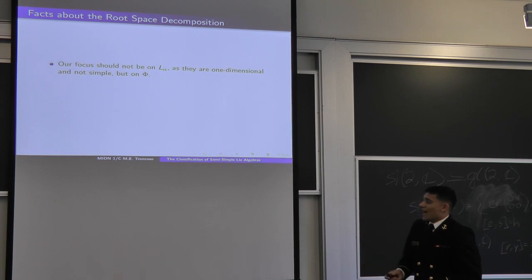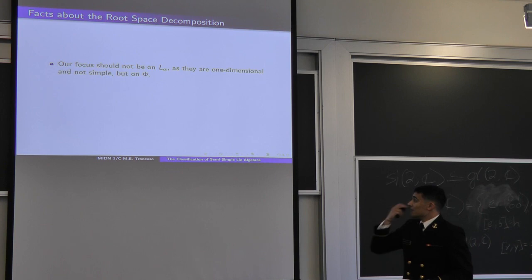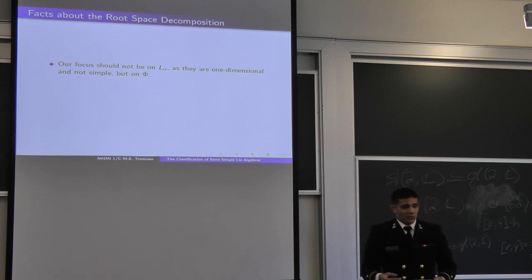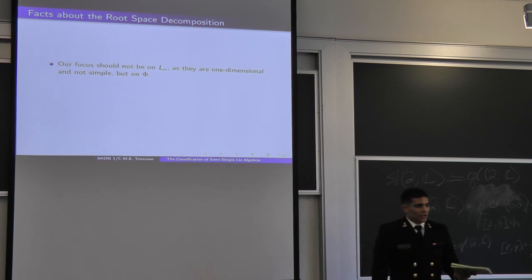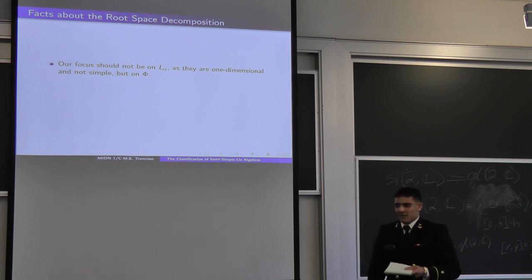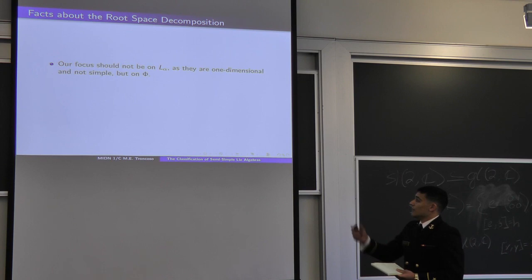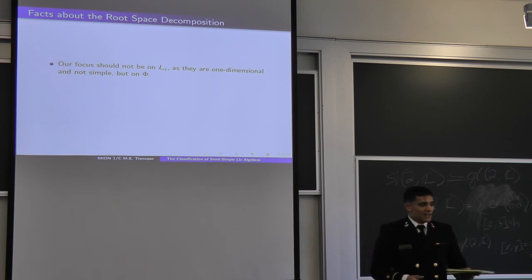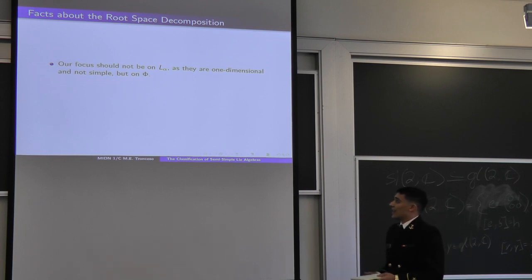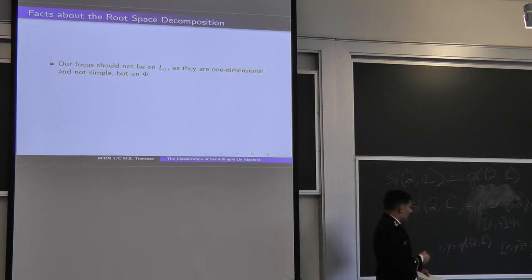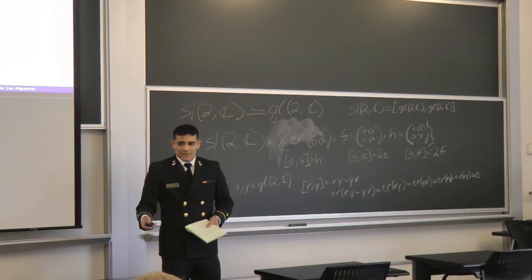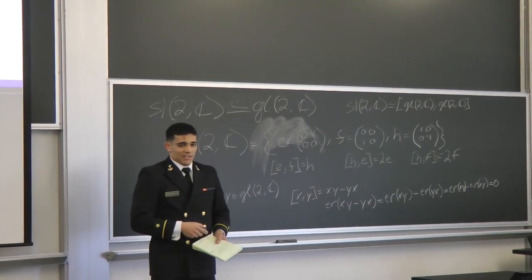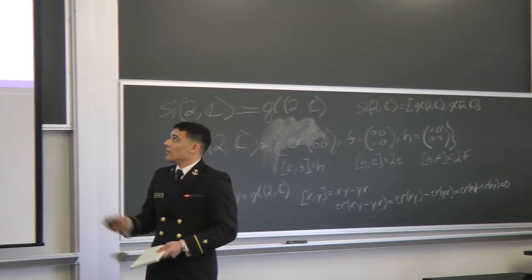The root space decomposition is not itself a simple decomposition because the L_α's are one-dimensional — each only has one eigenvector, so they themselves are not simple. However, we can use the root space decomposition as a road map to find simple Lie algebras nested within our semi-simple ones. Inside every semi-simple Lie algebra, you can find sub-algebras isomorphic to sl(2, C): taking basis vectors E from L_α, F from L_{−α}, and H from the Cartan sub-algebra, embedded within our semi-simple Lie algebra. The root space is also unique up to isomorphism, because every Cartan sub-algebra of a semi-simple Lie algebra will be conjugate to each other.